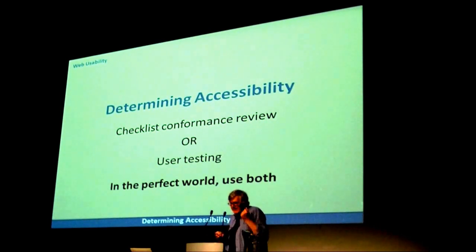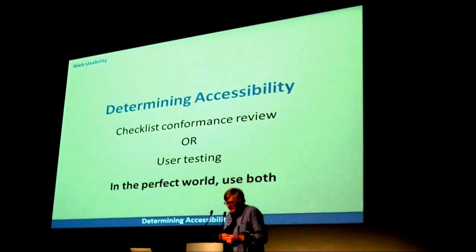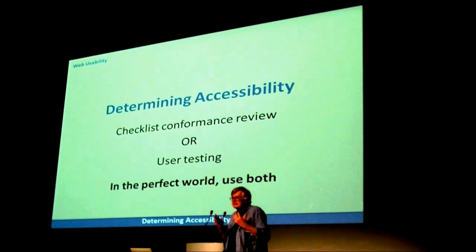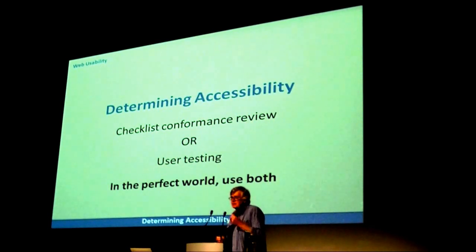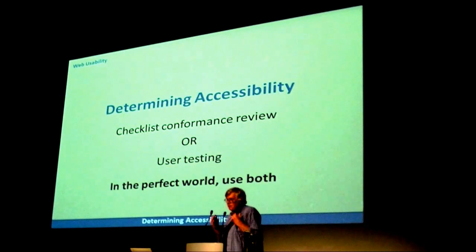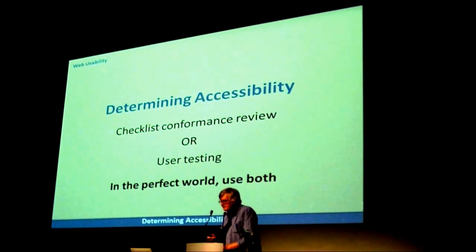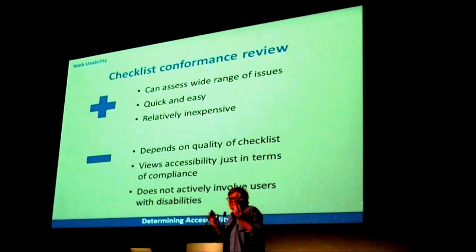There's been much discussion, and unfortunately some argument, about how to determine the accessibility of a website. Often this is polarised around two points of view: on one hand, compliance checking — conformance against a checklist of pre-set criteria; and on the other hand, the view that the only way you can tell if a site is accessible is by getting people with disabilities to test it. Both approaches have strengths and limitations. Neither alone can give you a reliable declaration of accessibility. Ideally any thorough evaluation should involve both, but real-world time and money constraints mean this very rarely happens. So most often, accessibility evaluations rely on compliance review.